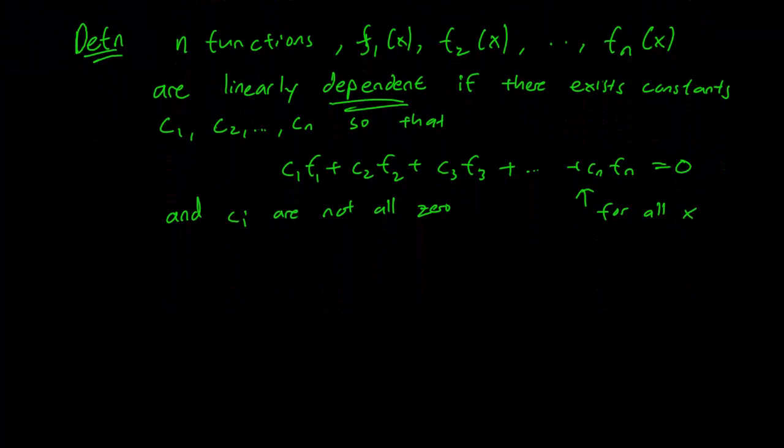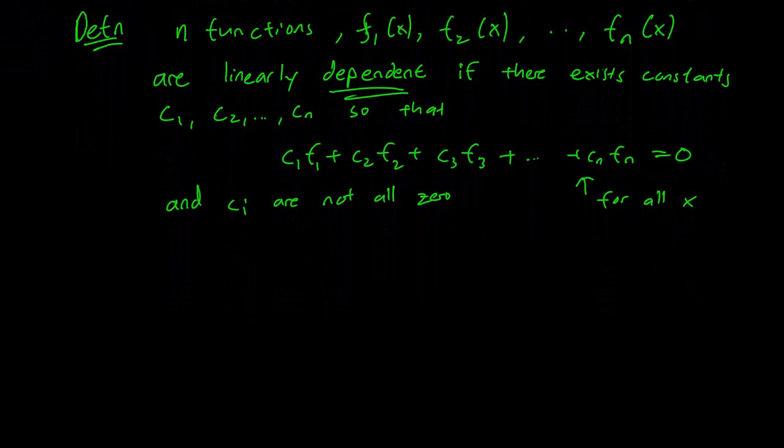Now you might think that this seems a bit different from the definition of linear dependence we had last time for two functions, but it's actually the same thing. If you remember, the definition for n equals 2 was that one function was a constant multiple of the other.